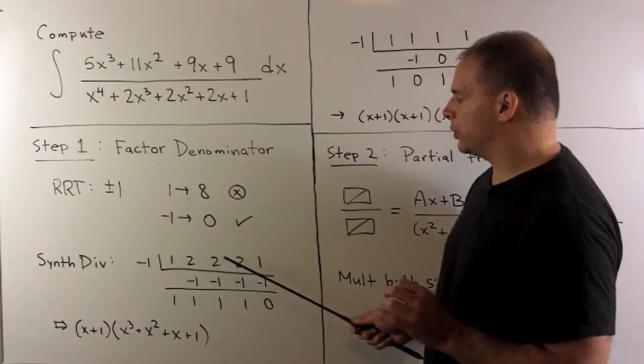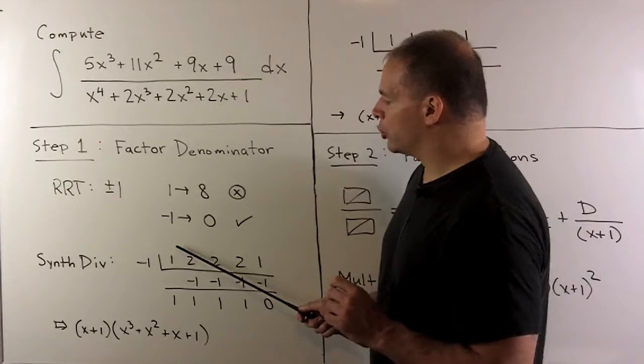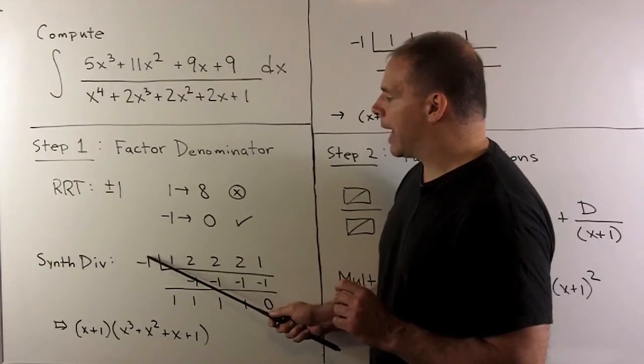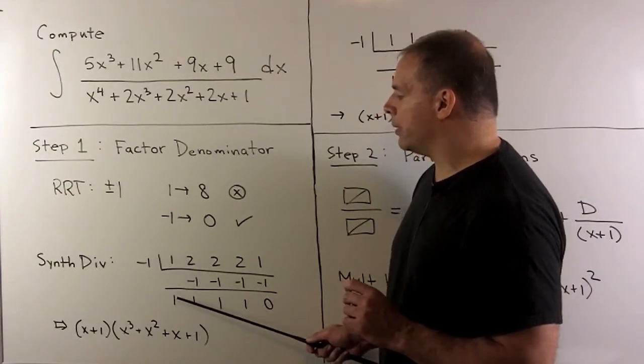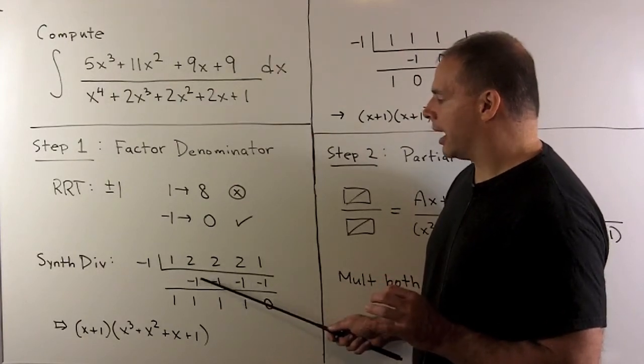We have 1, 2, 2, 2, 1. Then we proceed as follows: we drop our 1, multiply this minus 1 by that 1, move over to one column in the middle. We add, I get another 1. We multiply over to the middle, we add, we get 1.